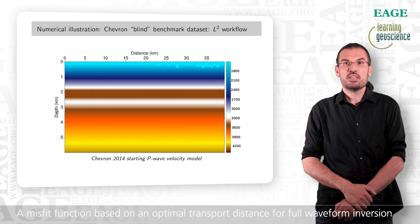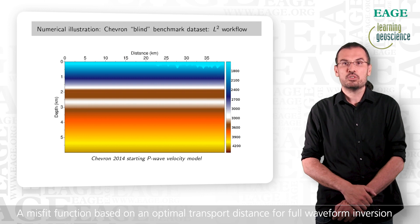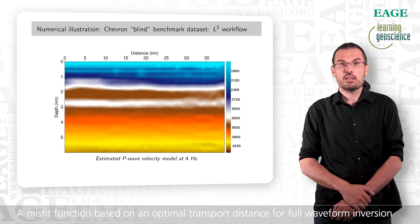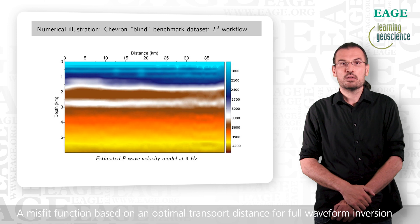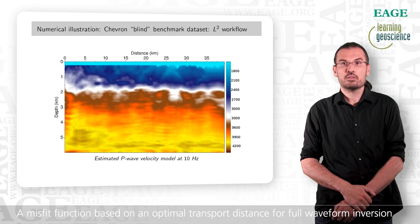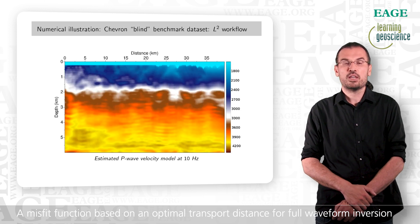As a comparison, we use the same workflow with the least squares misfit function. As you can see, already at 10 Hz, we have converged towards a local minimum.